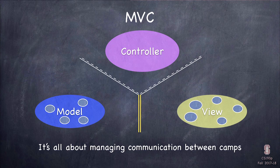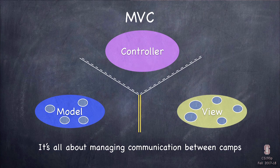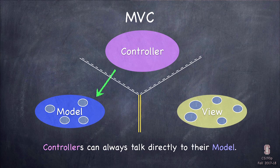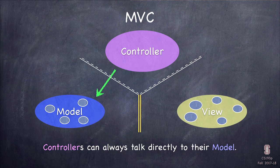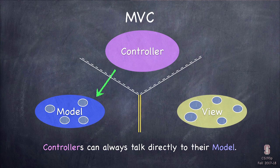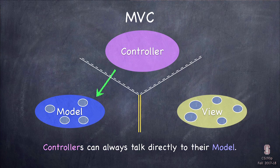MVC is really all about managing communication between these camps. Objects in each camp obey certain rules when talking to each other, represented by road signs. The controller talking to the model is a wide-open green arrow — unlimited communication to the model's publicly available functionality, because it's the controller's job to present the model's information to the user.